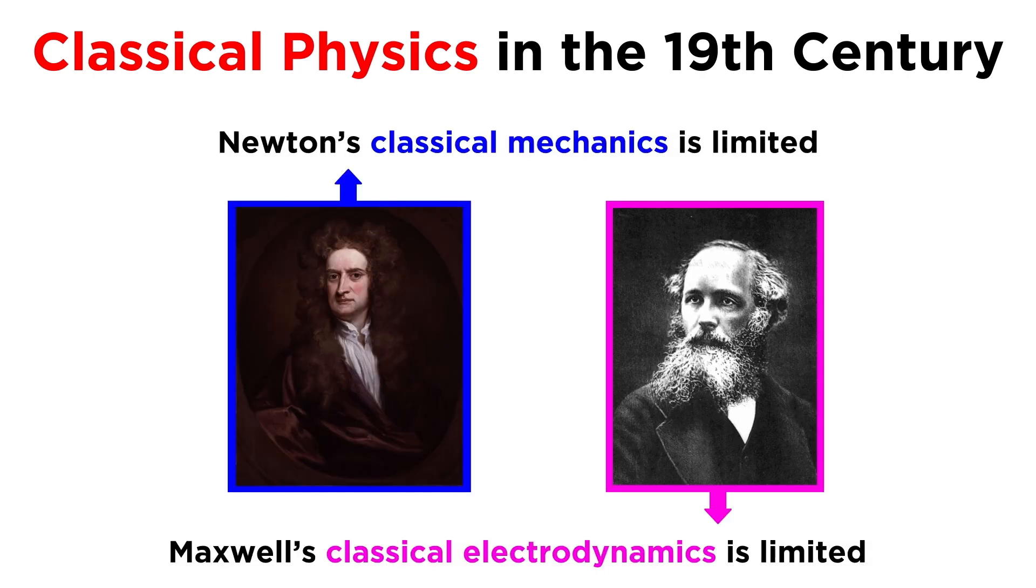This meant that what we now refer to as Newton's classical mechanics and Maxwell's classical electrodynamics do not offer a complete description of reality, but they are still very useful models that provide a lot of information about various phenomena.